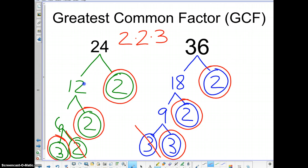Now to find the greatest common factor, we have to multiply that out. Okay. So 2 times 2 is 4. 4 times 3 is 12. 12 is our greatest common factor there.